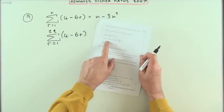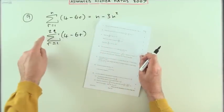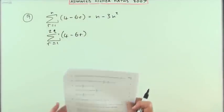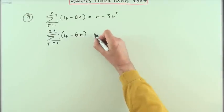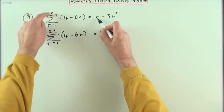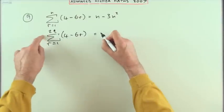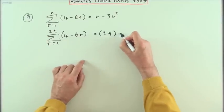Now the next part, hence write a formula for the sum up to 2q of exactly the same expression. It's just one mark because that's just a case of replacing n with 2q, so I'm going to have 2q minus 3 times 2q squared.